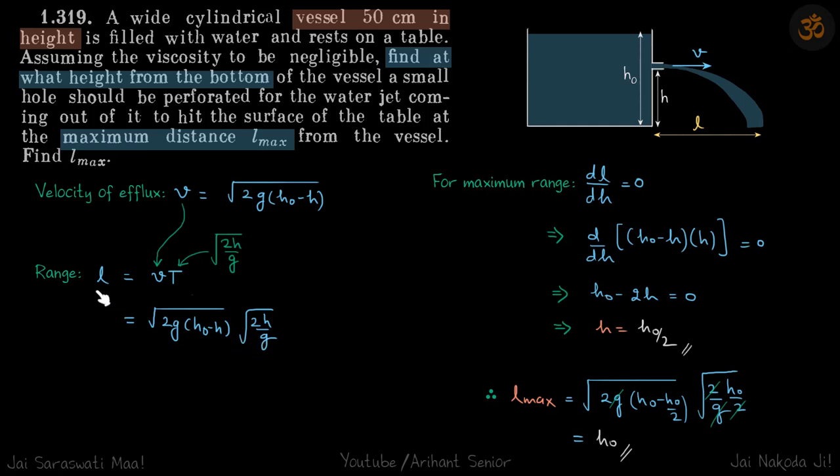So we need to find the maximum range. So we'll do dL by dH is equal to 0. So we integrate this with respect to H. So we can remove the root and integrate what is inside the root. Sorry, not integrate, differentiate what is inside the root and we get H is equal to H0 by 2.